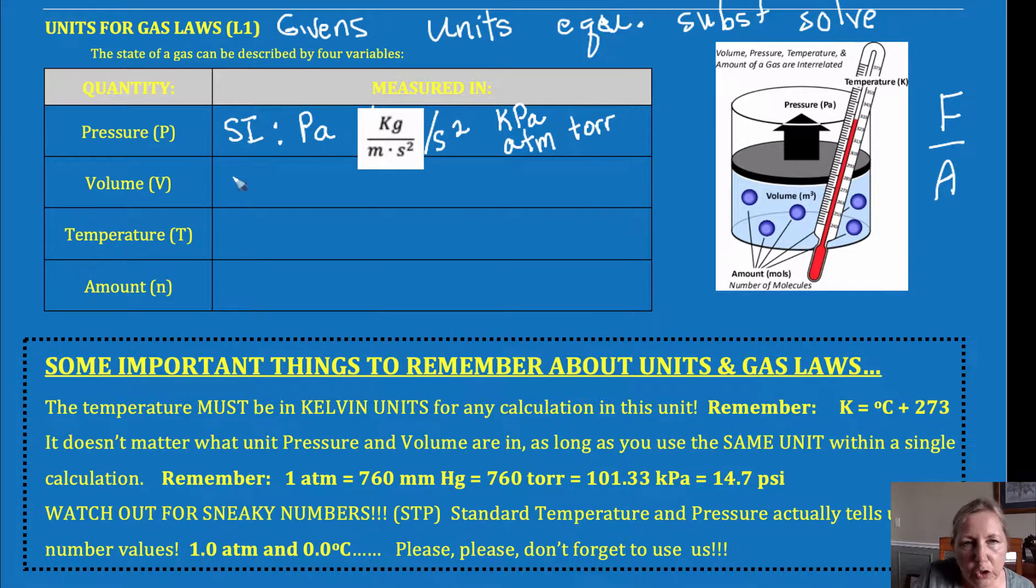For volume, our SI unit is the meter cubed. Other common units you're going to come across is a decimeter cubed, which is identical to a liter, and a centimeter cubed, which is identical to a milliliter. So those are the common ones you'll use there.